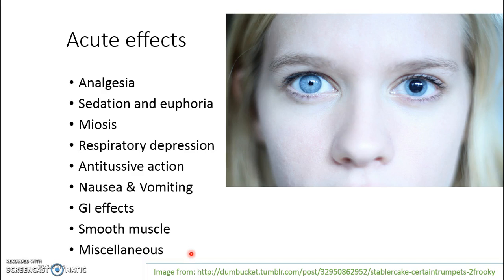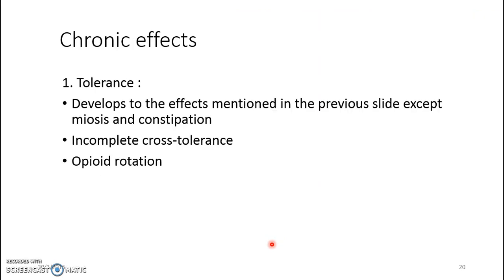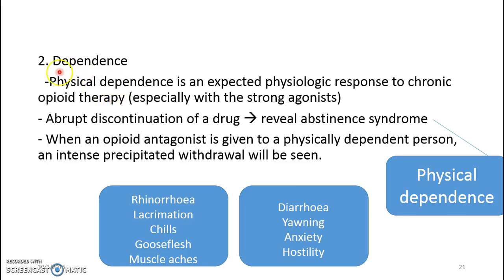Opioids can also cause release of prolactin. We may see an exaggerated response to opioids especially in patients with adrenal gland insufficiency or hypothyroidism. Moving on to the chronic effects of opioids — these are basically tolerance and dependence.